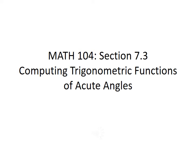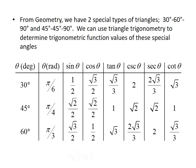In this lecture, we're going to talk about computing trigonometric functions of acute angles. From geometry and trigonometry, we have two special types of triangles that we often use: the first is a 30-60-90 degree triangle, and the second is a 45-45-90 degree triangle.